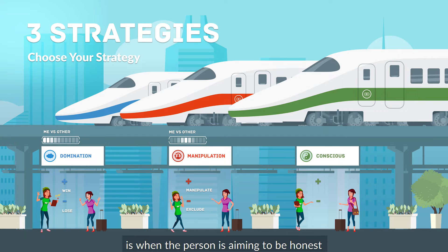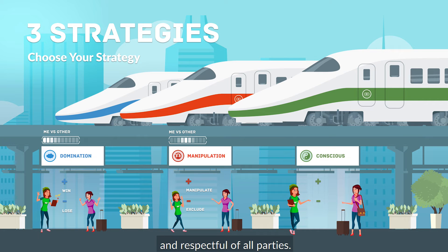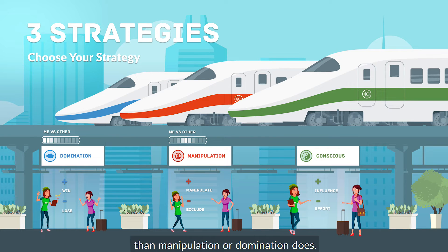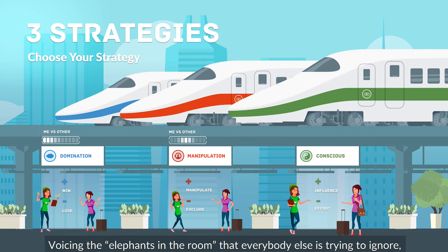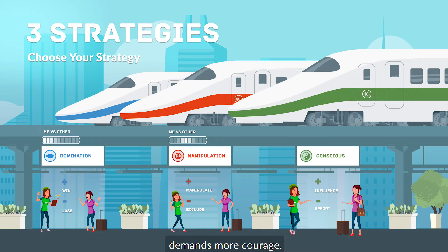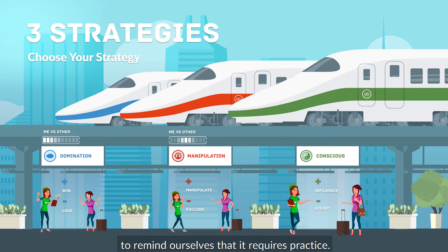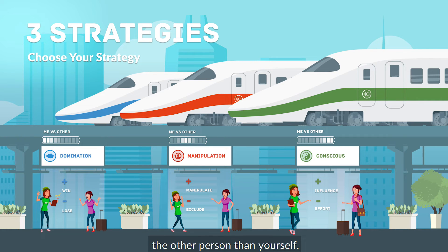Conscious communication is when the person is aiming to be honest and respectful of all parties. The benefit of conscious communication is that it builds influence through trust. The downside is that it requires more effort than manipulation or domination does. Voicing the elephants in the room that everybody else is trying to ignore demands more courage. That's why we call it the martial art of conscious communication — to remind ourselves that it requires a lot of practice. On the scale of me versus other, it's when you focus more on the other person than yourself.